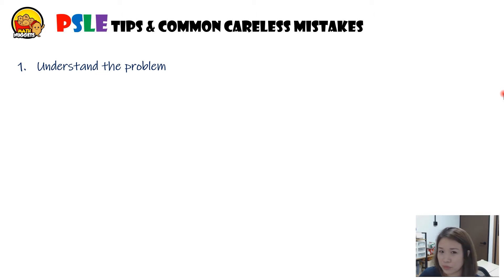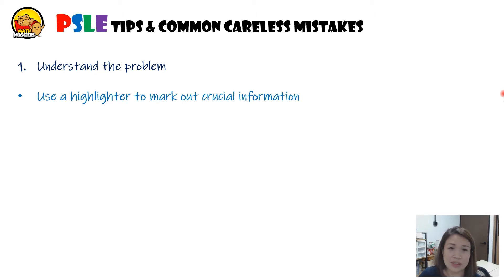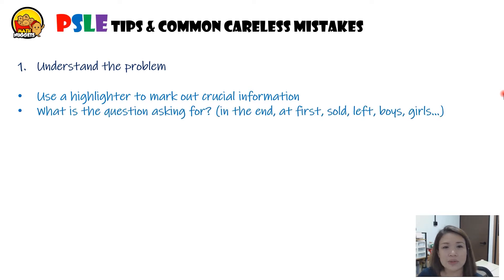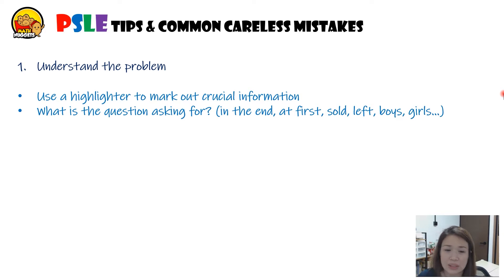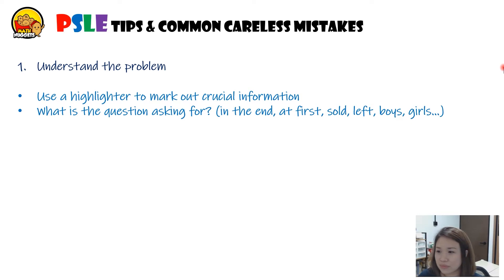Step one: understand the problem. First, use a highlighter to mark out crucial information — highlight or underline important points. Next, check what the question is asking for: are they asking for what's at the end or what's at first, what's sold, what's left, or looking for boys or girls?